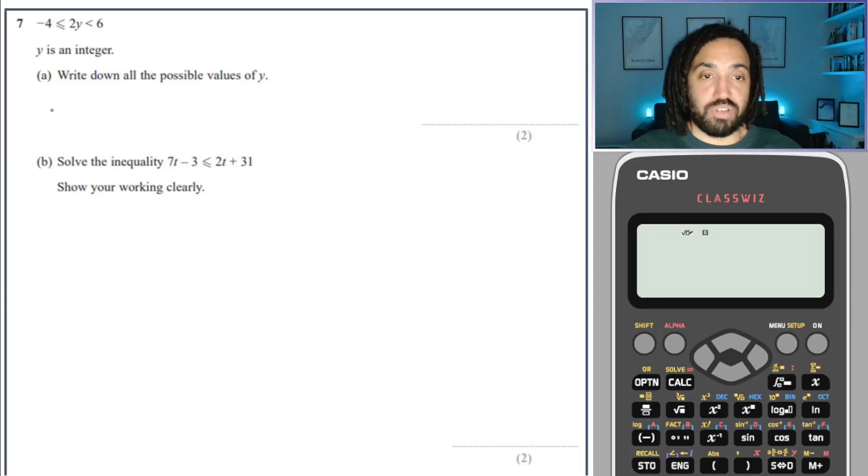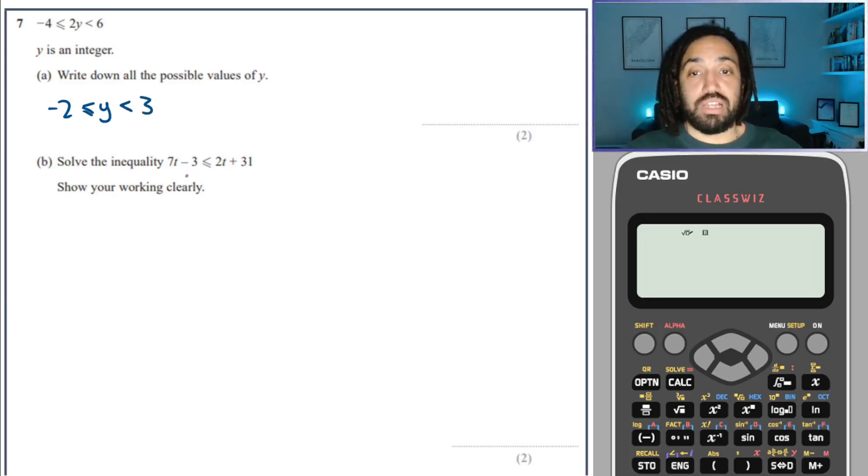This one we divide everything by 2 and that will give me it in terms of y. Just divide every term by 2. And now it says work out the possibilities. Well, it could be minus 2, could be minus 1, could be 0, could be 1, could be 2, can't be 3.